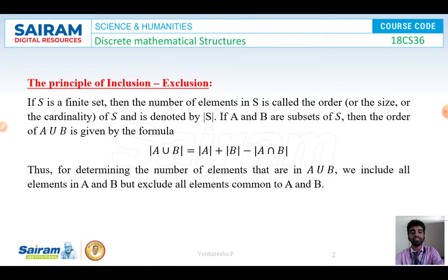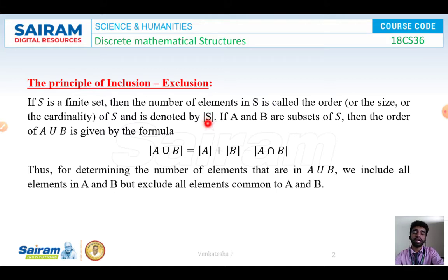I will be starting with a statement for the principle of inclusion and exclusion. To state this, I will be taking a finite set S and two subsets A, B of the finite set S. The statement is: if S is a finite set, then the number of elements in S is called the order, or size, or the cardinality of S. This order of S is denoted by the symbol mod of S. I will be calling it as cardinality of S. So now I will be taking two subsets of S, that is A and B.